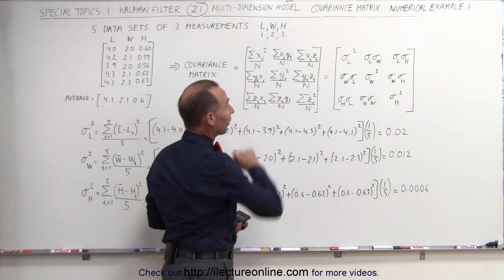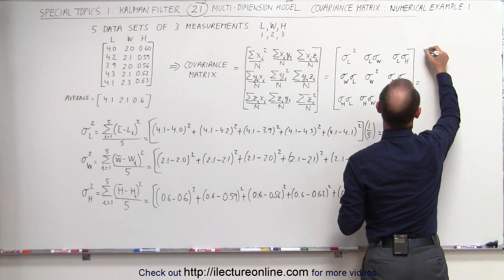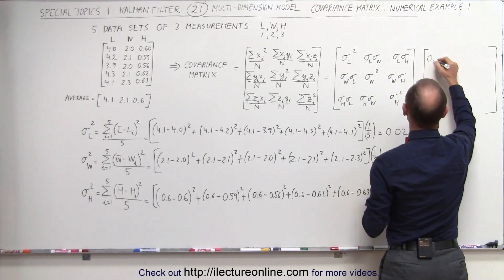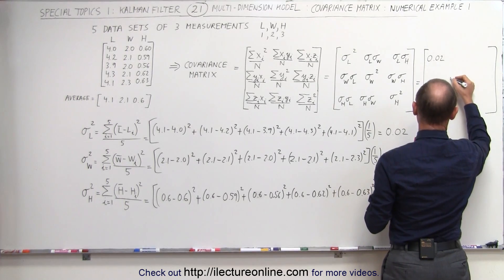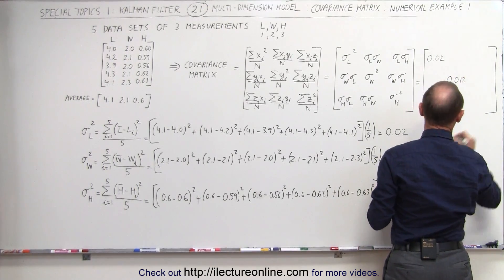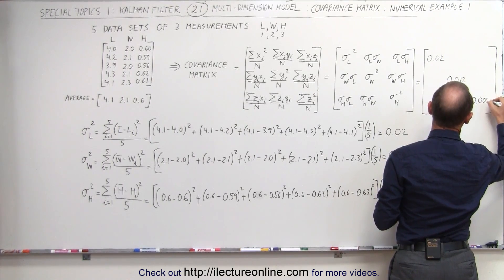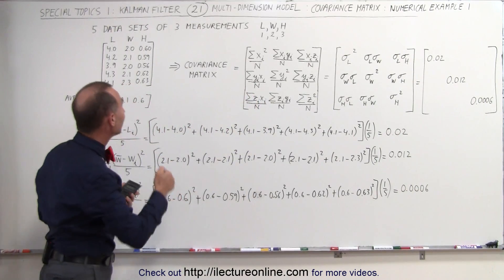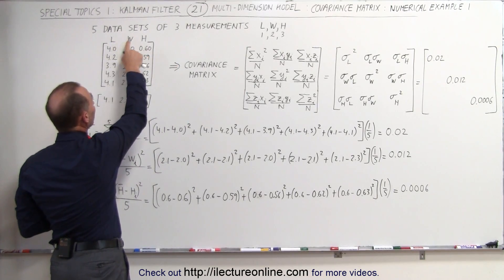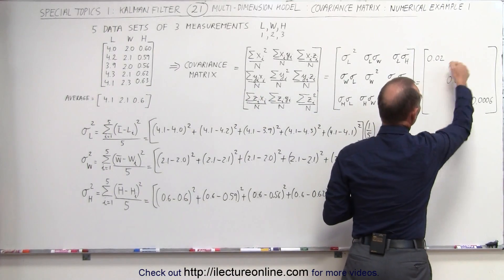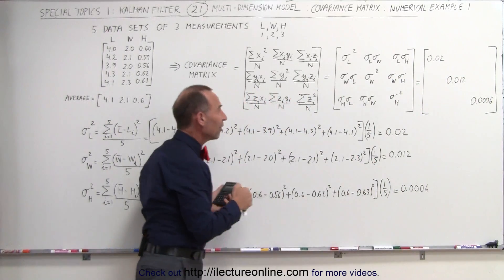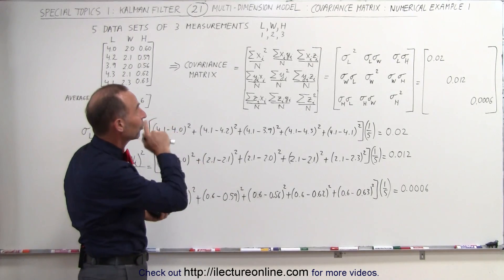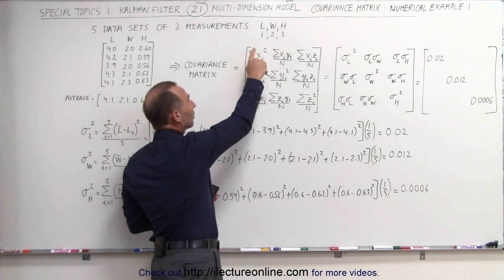Those would then be the diagonal elements of our matrix. On the diagonal we get the variance for the length measurement: 0.02; the variance of the width element: 0.012; and the variance of the height readings: 0.0006. That's the beginning of our covariance matrix. The diagonal represents the variances in the measurements of the three values — length, width, and height. On the off-diagonal elements, we'll get the relative variances, or what we call the covariances — the variance of length relative to width, length relative to height, and width relative to height.